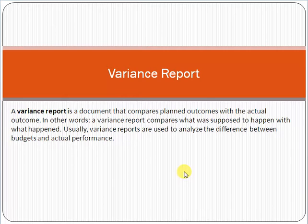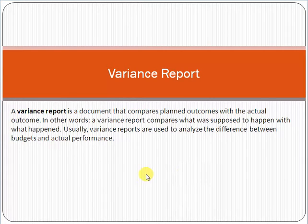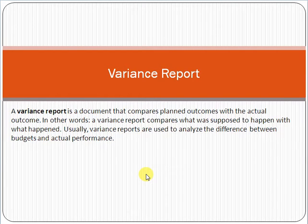For example, you are implementing an e-commerce solution for a customer and you planned that the software development will complete in 30 days — this is your planned duration. However, in actual, the software development was completed in 50 days. So 30 minus 50 equals minus 20, meaning there is a difference of 20 days — you basically over-utilized 20 days compared to the plan.